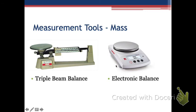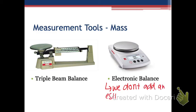One beam is the hundreds place, one is the tens, and one is the ones place. Electronic balances are just simple scales — sometimes measured to the tens, sometimes to the hundredths. For electronic measurement devices, we do not estimate or add an estimated digit, because we only see what the screen tells us. We don't know if the value goes further in either direction, so we don't add digits on top of what's displayed.